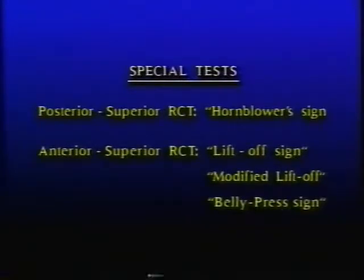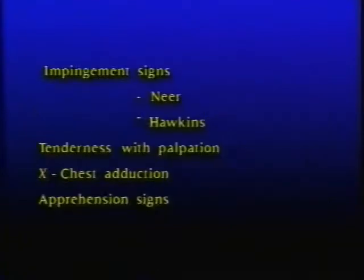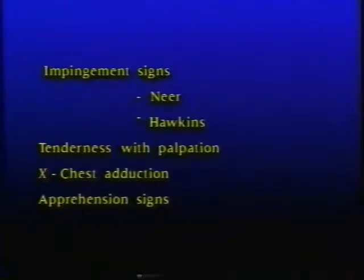Special tests include the hornblower sign, which is pathognomonic for posterior superior rotator cuff tears, and signs for anterior superior tears involving the subscapularis, including the lift-off sign, the modified lift-off sign, and the belly press sign. Impingement signs are modifications of tests described by Neer and Hawkins. Pain with cross-chest adduction indicates AC joint disease, and apprehension signs should always be considered in younger individuals who may present with a mixed picture of instability and impingement.